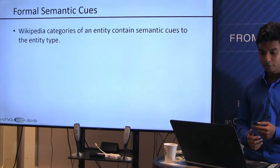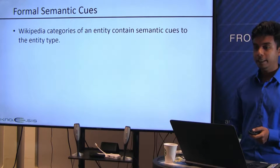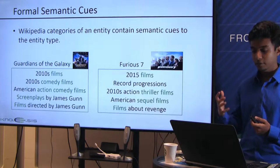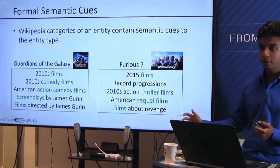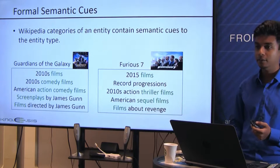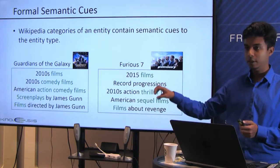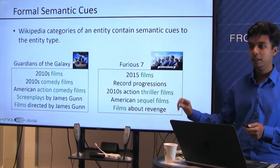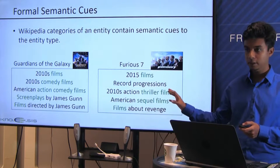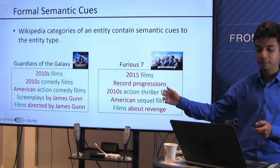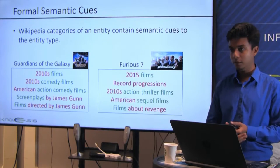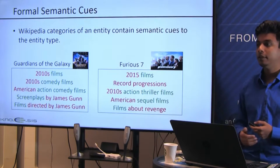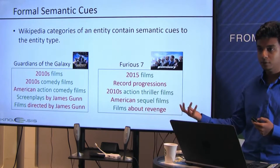To find formal semantic cues, we use Wikipedia categories. Wikipedia categories of an entity contain semantic cues to the entity type. For example, for movies Guardians of the Galaxy and Furious 7, terms like films, comedy, action, screenplays, thrillers, and sequel are semantic cues, while terms like 2010s, American, James Gunn, Director, Revenge, Record, and Progressions are not. We identified that the head nouns of these categories were mostly the semantic cues of the entity type.